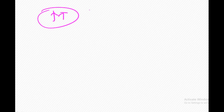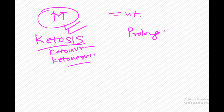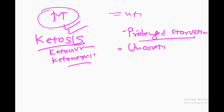In which condition is ketone body production increased such that production exceeds utilization? That is called ketosis, which includes ketonuria (ketone bodies in urine) and ketonemia (increased ketone bodies in blood). The two conditions are prolonged starvation and uncontrolled diabetes mellitus. You may have heard that during prolonged hunger strikes, urine is tested for ketone bodies because ketone body levels are increased in prolonged starvation.